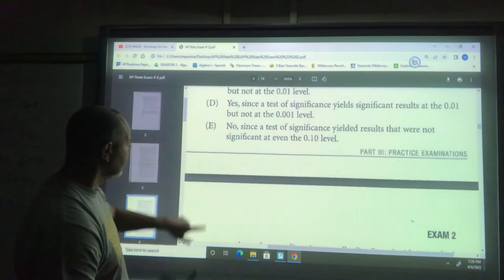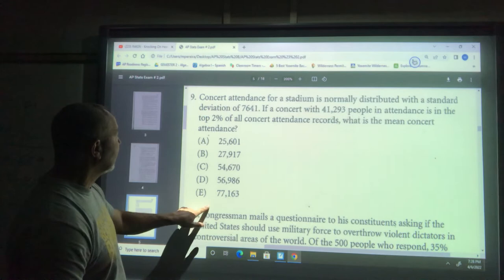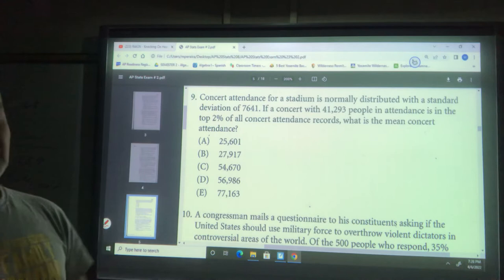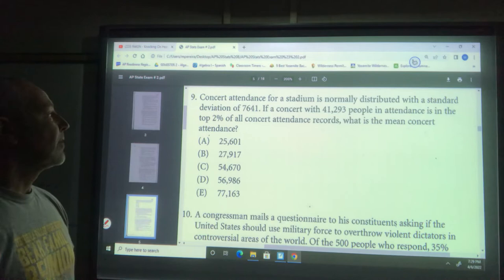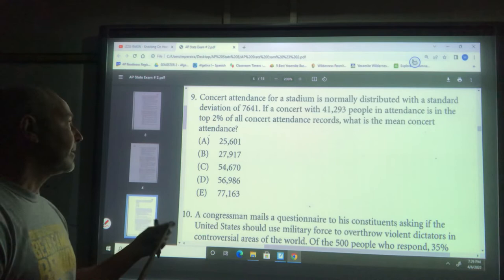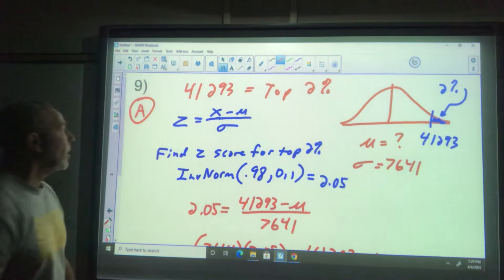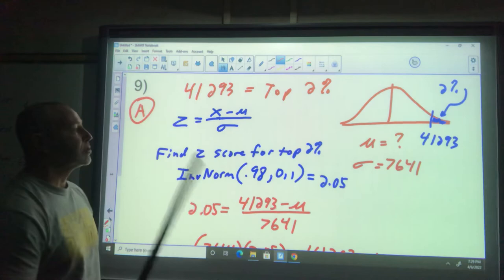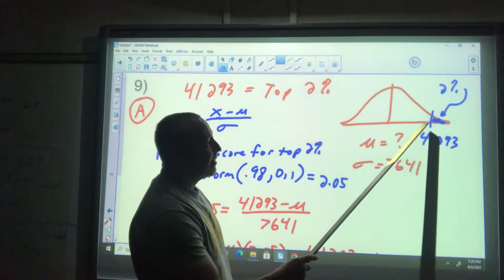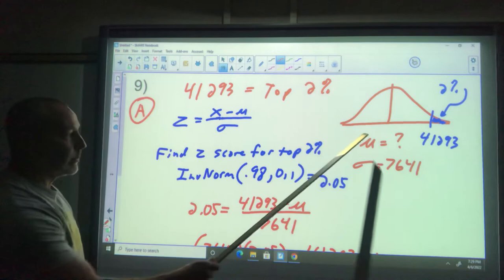Number nine: Concert attendance for a stadium is normally distributed with a standard deviation of 7,641. If a concert with 41,293 people in attendance is in the top 2 percent of all concert attendance, what's the mean? 41,293 equals the top 2 percent on our picture here.